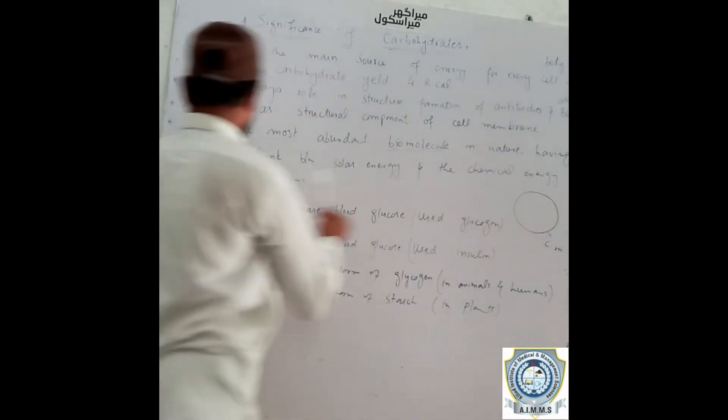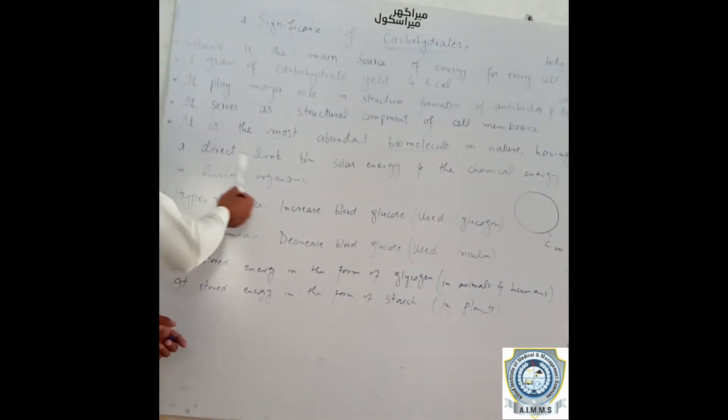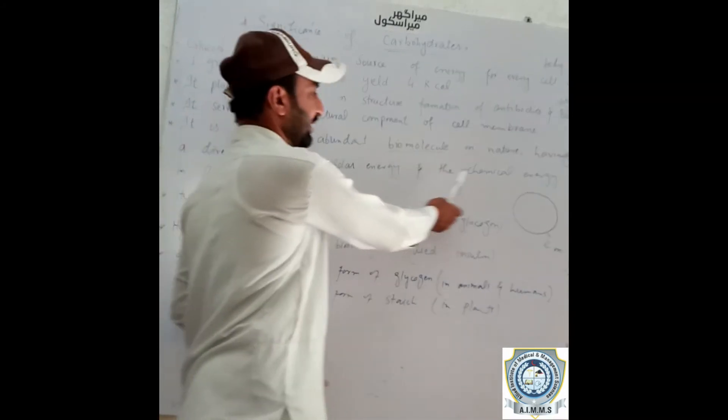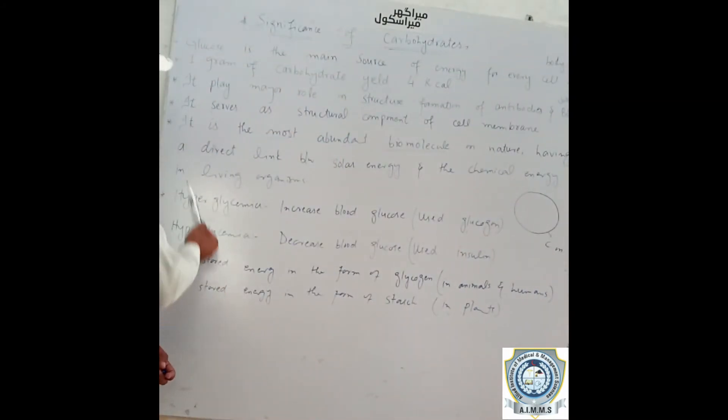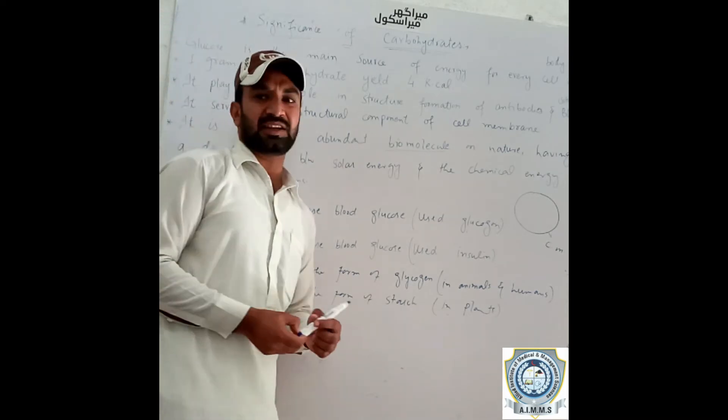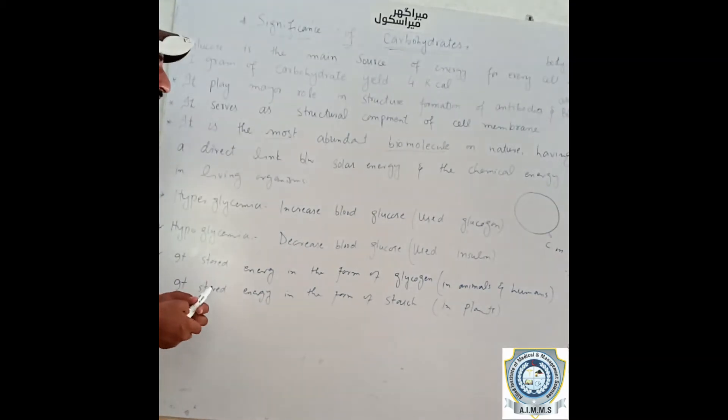There is a direct link between solar energy and the chemical energy in living organisms. All energy comes from the sun, and plants capture this solar energy.